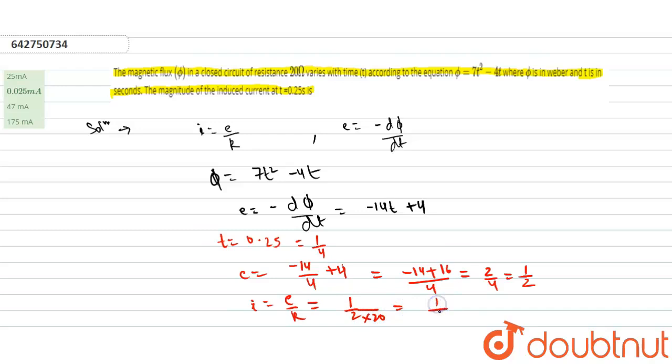So it will give 0.5 divided by 20, which is equal to 1 by 40, which is equal to 0.025 ampere. And in milliampere it will become 25 milliampere. So our final answer is 25 milliampere.